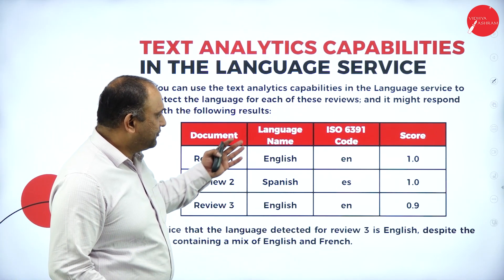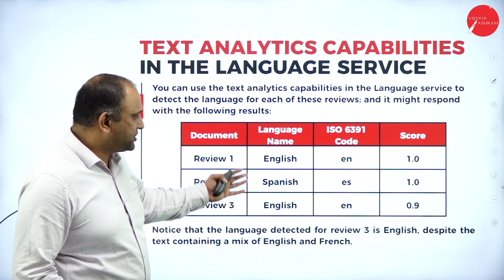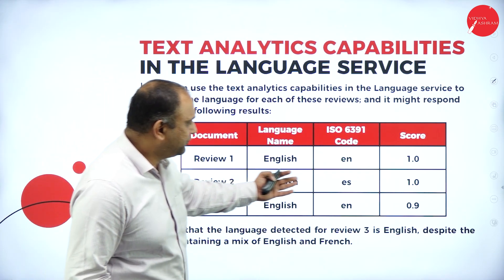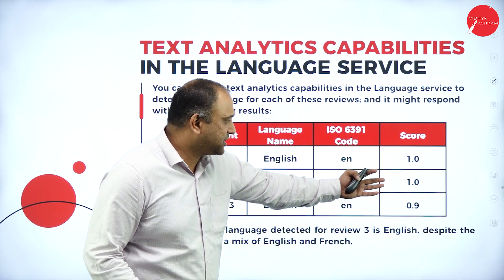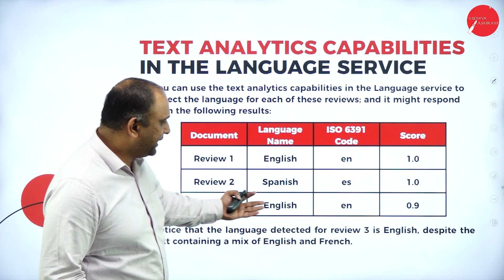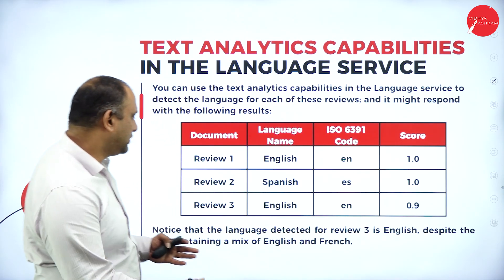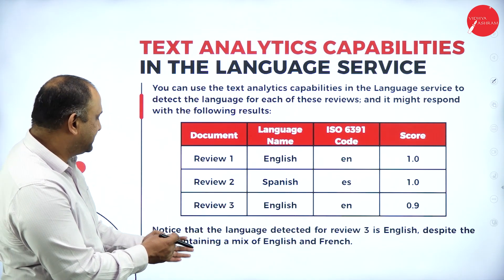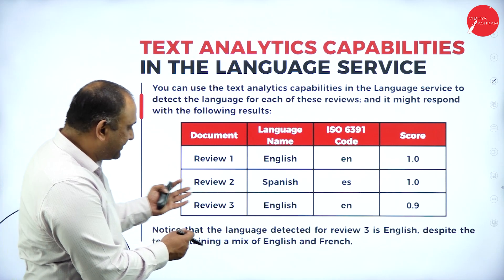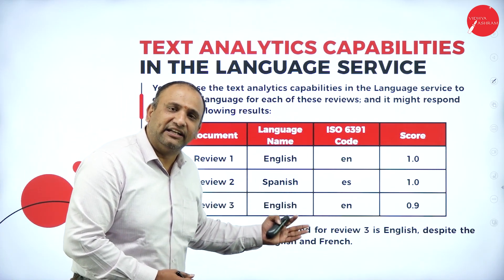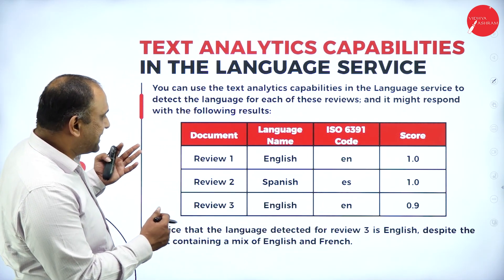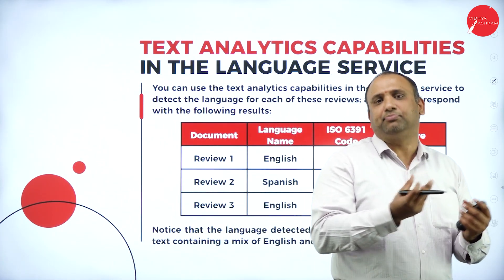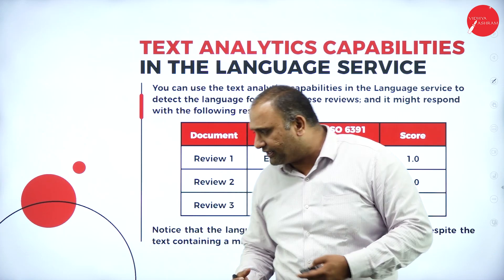Looking at the results: the language detected for review 1 is English with a score of 1; for review 2, Spanish with a score of 1; and review 3, English again with a score of 0.9. This shows that the system is able to pick up English and Spanish, but not French words separately — the language detected for review 3 is English despite containing a mix of English and French.